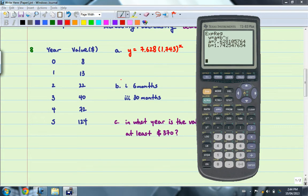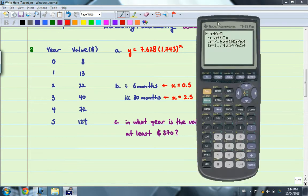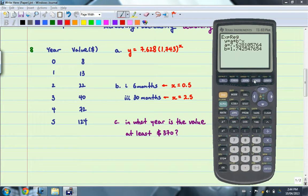For question part B, we're going to calculate what's the value of the card after 6 months. And once again, 6 months is going to be half a year, so x is going to be equal to 0.5. And for 30 months, that is going to be 2 and a half years. So I go calculate, value, I'm going to enter my 0.5, and see the value is about $10.07.